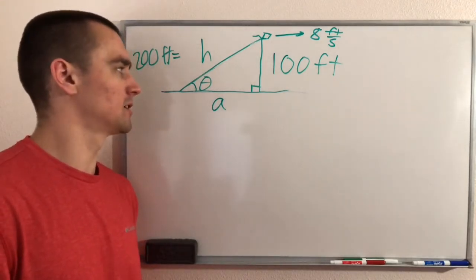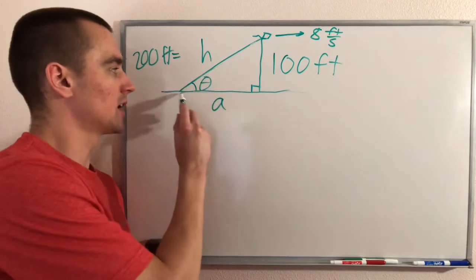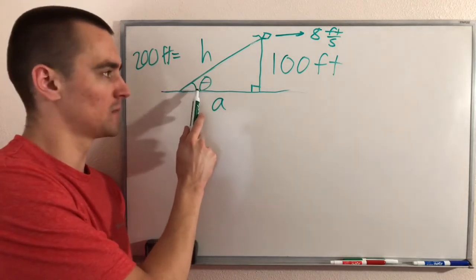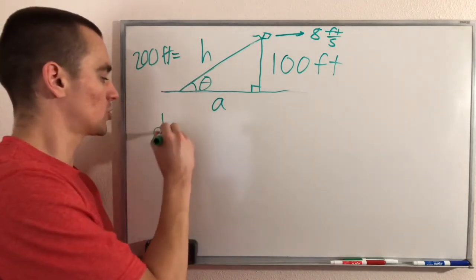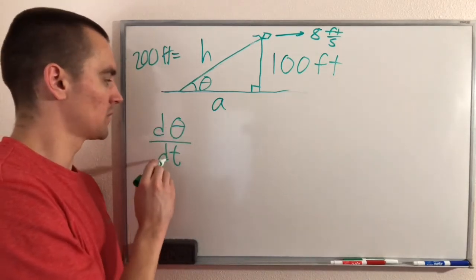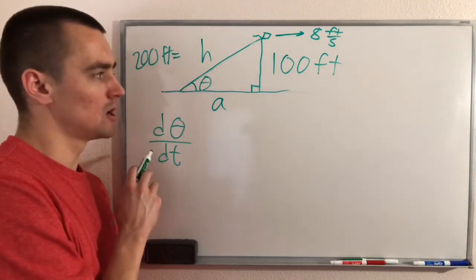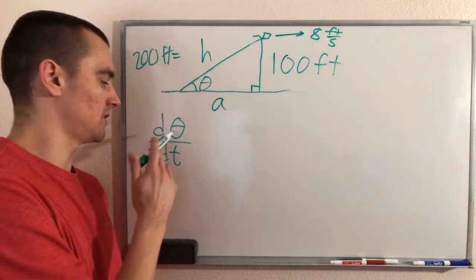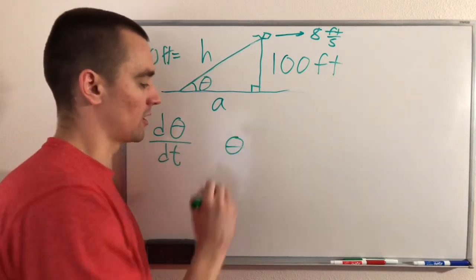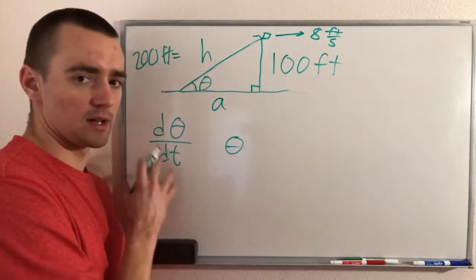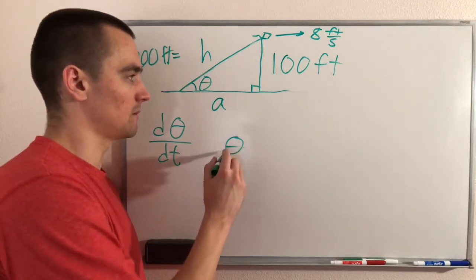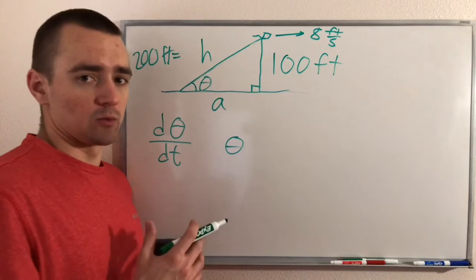This lays out everything given to us. Now the second step is to come up with our equation. Think about which variable needs to be in our equation — we're trying to find the rate that the angle between the string and the horizontal is decreasing, so our goal is the rate of change of theta with respect to time, dθ/dt. Our equation should contain theta so we can reach dθ/dt via implicit differentiation.